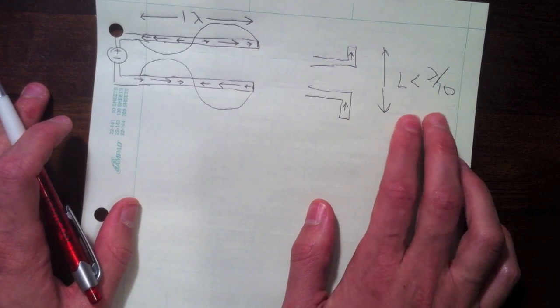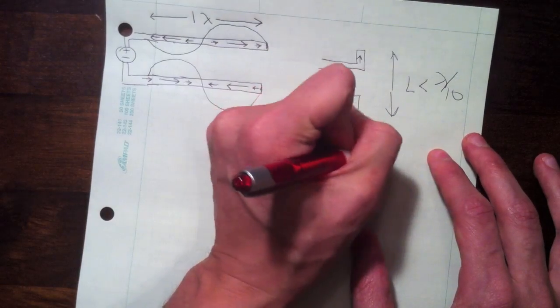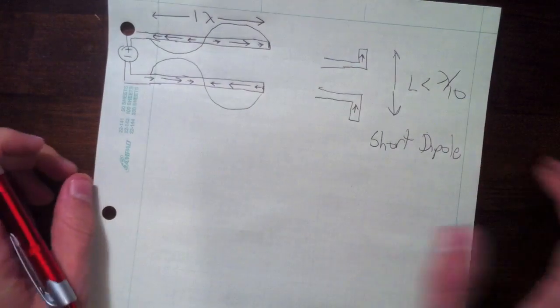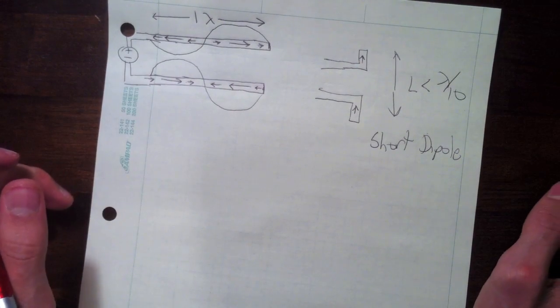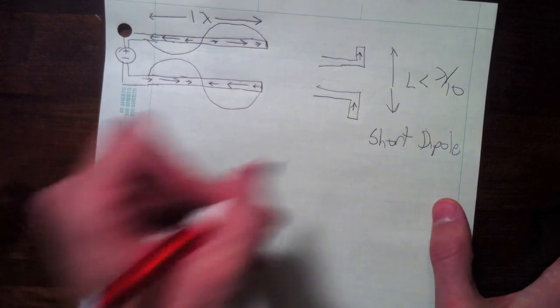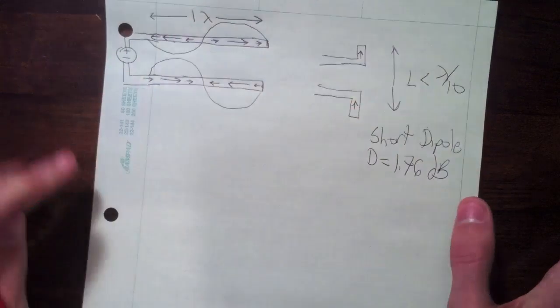So when we have a length this small, we call it a short dipole antenna, and the directivity of this is about 1.76 dB. It's pretty much the smallest directivity you can find for any realizable antenna.